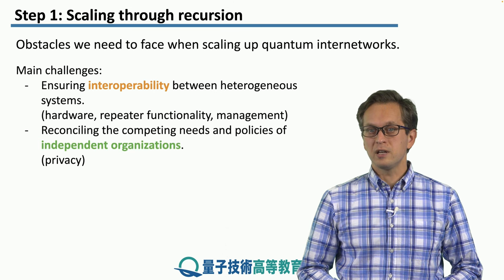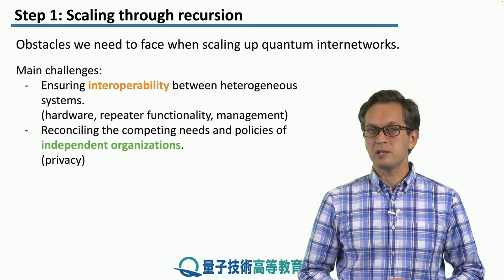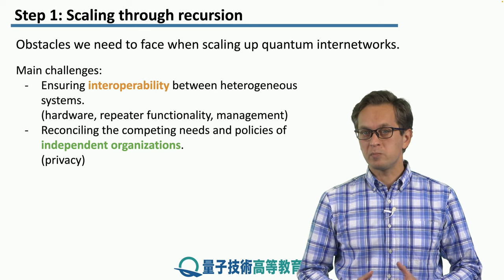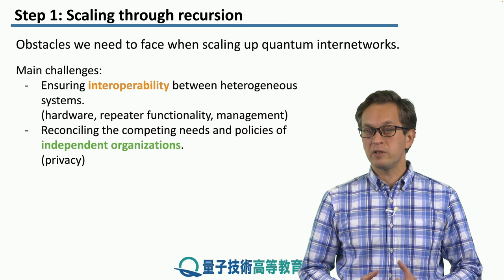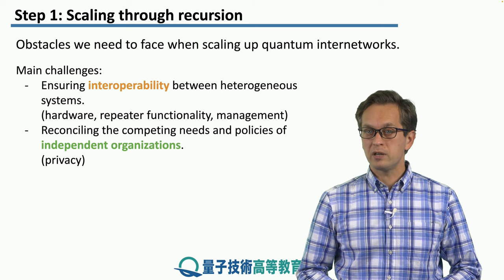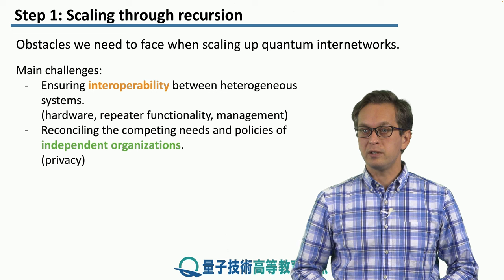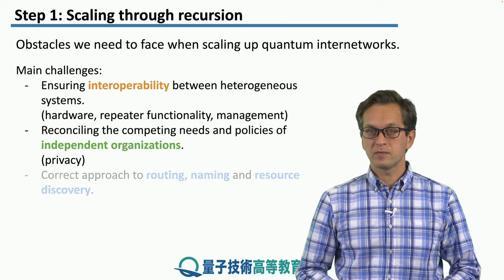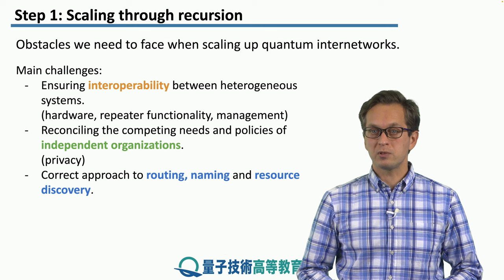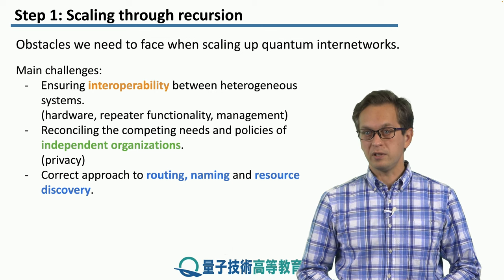Another challenge is the reconciliation of competing needs and policies of independent organizations. One such big need is privacy. Different organizations want to communicate together, but they don't want to divulge all of their information about their networks. The next challenge is to pick the correct approach to routing, naming, and resource discovery in the networks.